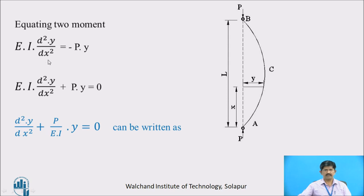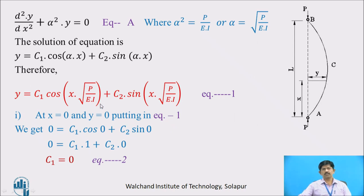Mathematically, moment is given by EI·d²Y/dx². Equating both moments, we get EI·d²Y/dx² = −P·Y. Taking the term to the left hand side: EI·d²Y/dx² + PY = 0. Dividing through by EI: d²Y/dx² + (P/EI)·Y = 0. This equation can also be written as d²Y/dx² + α²Y = 0, which is equation (A), where α² = P/EI, therefore α = √(P/EI).